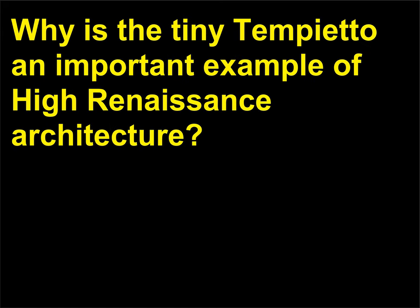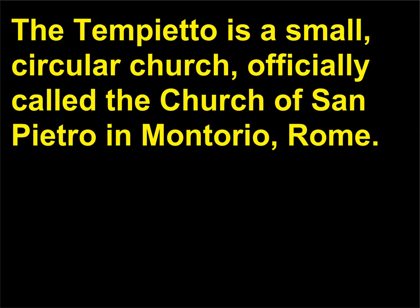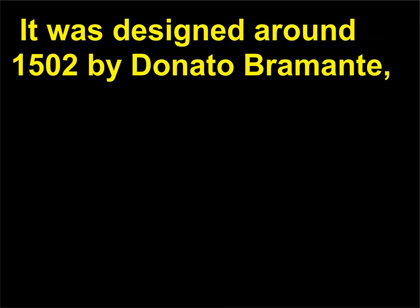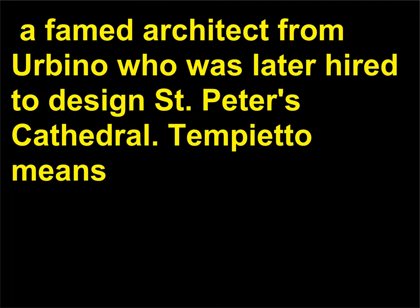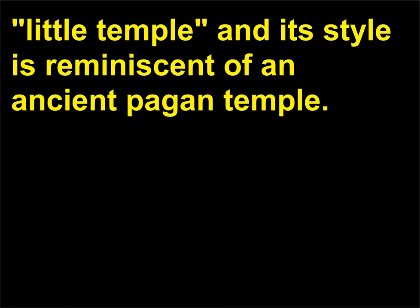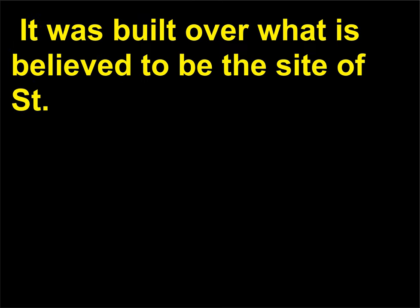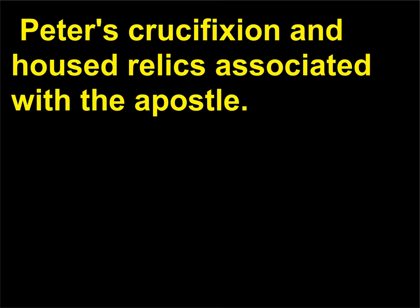Why is the tiny Tempietto an important example of High Renaissance architecture? The church, officially called the Church of San Pietro in Montorio, Rome, was designed around 1502 by Donato Bramante — a famed architect from Urbino who was later hired to design Saint Peter's Cathedral. Tempietto means 'little temple' and its style is reminiscent of an ancient pagan temple. It was built over what is believed to be the site of St. Peter's crucifixion and housed relics associated with the apostle.